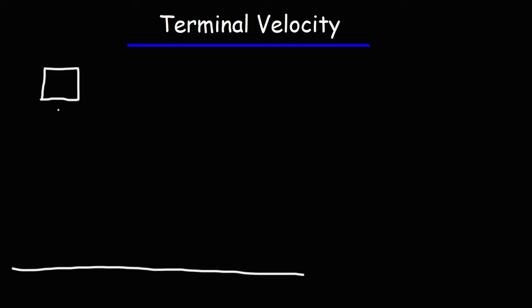In this video, we're going to talk about terminal velocity, particularly the concepts that relate to it. So let's say if you have an object at some height h above the ground, and you drop it, you release it from rest. Initially, there's only one force acting on this object, and that is the weight force.